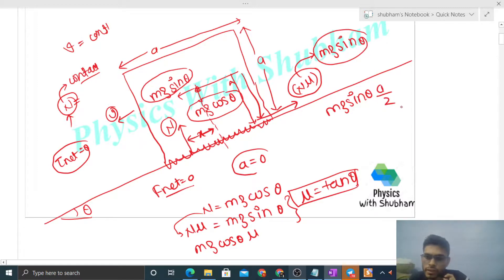So the same amount of torque from normal reaction will be in clockwise direction so that net torque becomes zero. Friction force has anti-clockwise torque, so normal will have equal clockwise torque. Normal reaction's torque value will also be mg sin theta times a by 2, just clockwise.